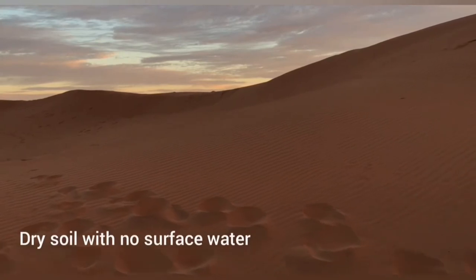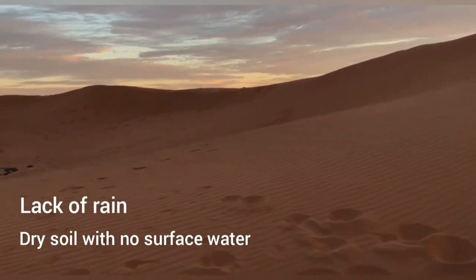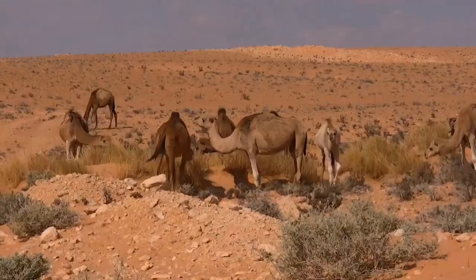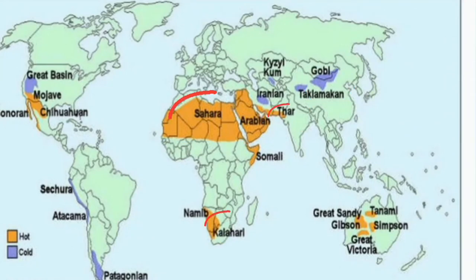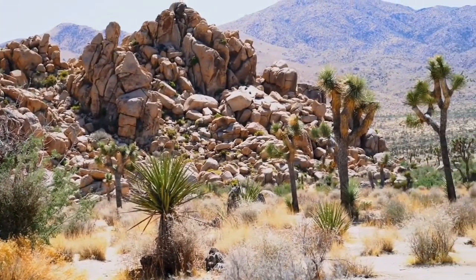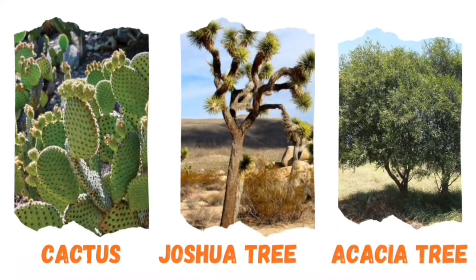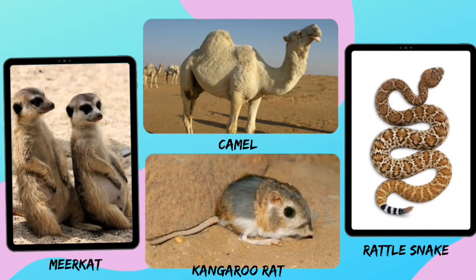Deserts are the driest places on the earth. They receive very little rainfall throughout the year. Here the soil is dry with no surface water. They can be either hot or cold. Sahara, Kalahari and Thar Desert are hot deserts, while Gobi Desert in China is a cold desert. Few examples of organisms found in deserts are Cactus, Joshua tree, Acacia tree, Camel, Rattlesnake and Kangaroo Rat.